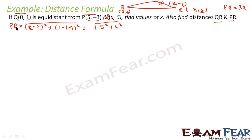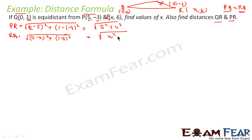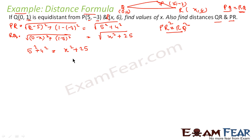Now we find RQ. Q is (0,1) and R is (x,6), so RQ equals root of (0-x)² + (1-6)², which becomes root of x² + 25. Since PQ equals RQ, we square both sides: 5² + 4² = x² + 25, so 25 + 16 = x² + 25, meaning x² equals 16.